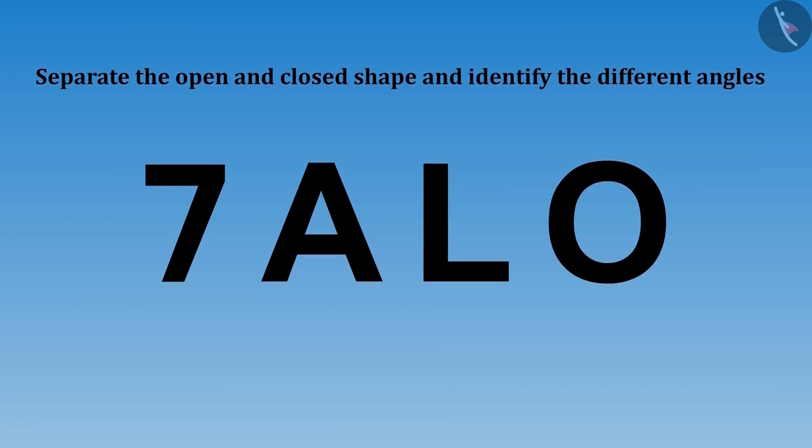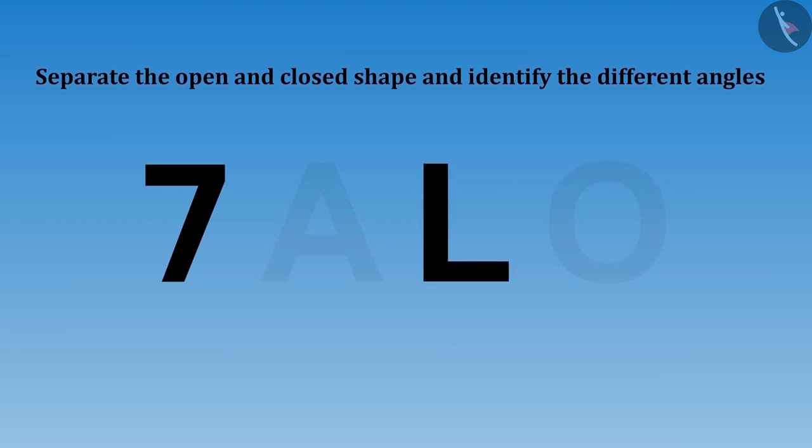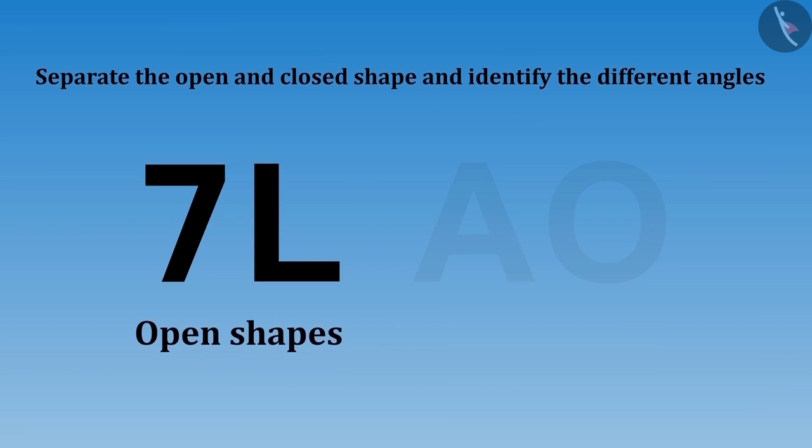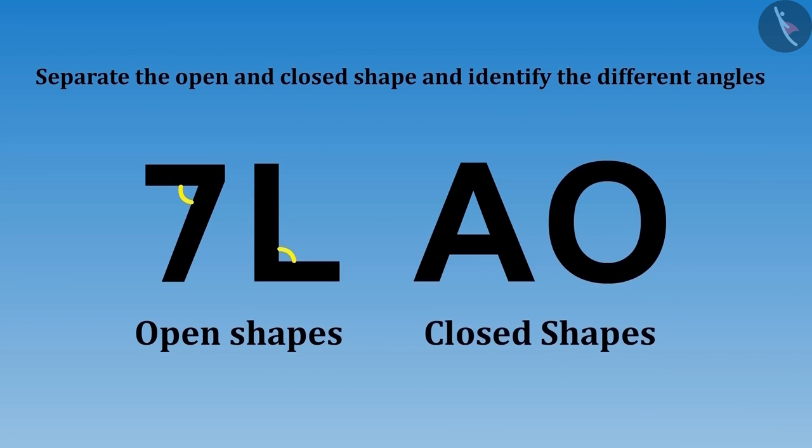Yes sister, why not? I know how to do this now. Here number 7 and the letter L are open shapes. They have one angle in them. A and O are closed figures. But alphabet A has several angles in it.